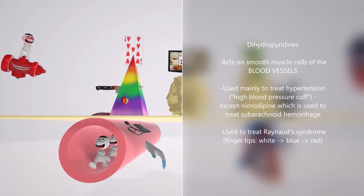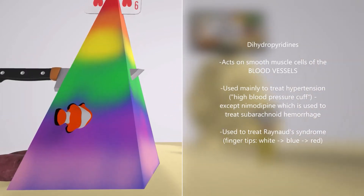The exception, however, is nimodipine. Nimodipine is not used to treat hypertension — it's primarily used to treat subarachnoid hemorrhage by preventing cerebral vasospasm. And you'll notice that Nemo's head was actually in the pyramid, to help us remember that nimodipine is used to treat subarachnoid hemorrhage.